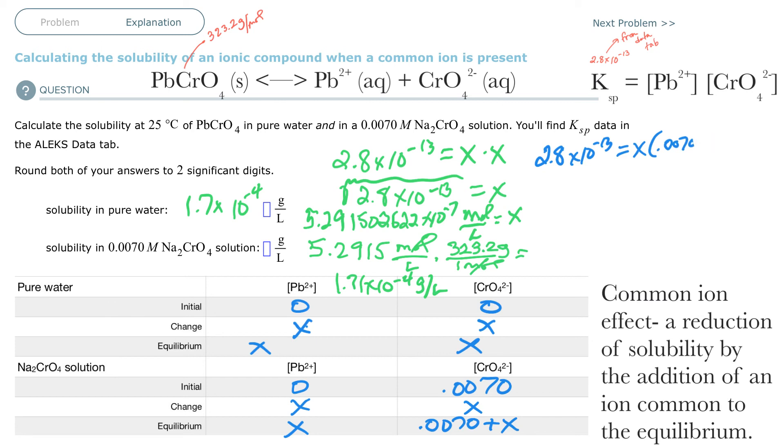That's called fudging, and I'm very good at it. So this is 0.0070. Now I just have, it's not even square root. I'm just going to divide 2.8 times 10 to the negative 13 and divide it by 0.0070.